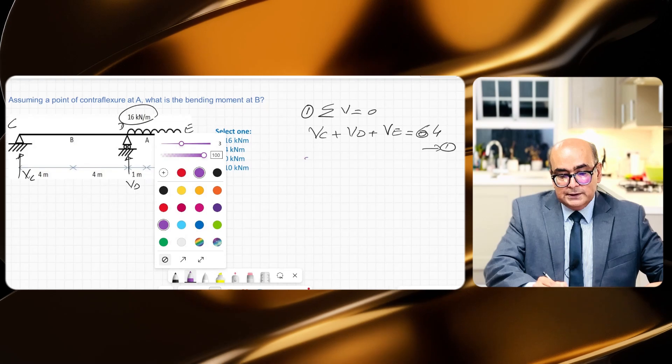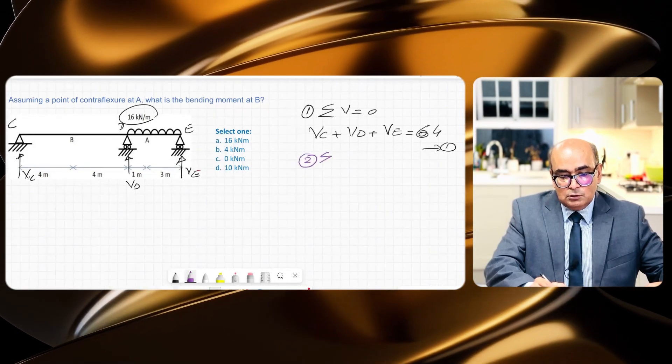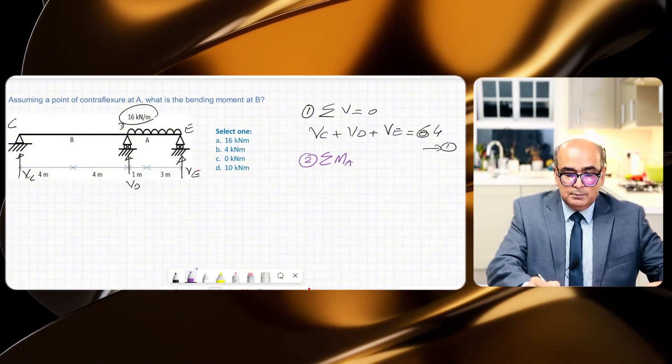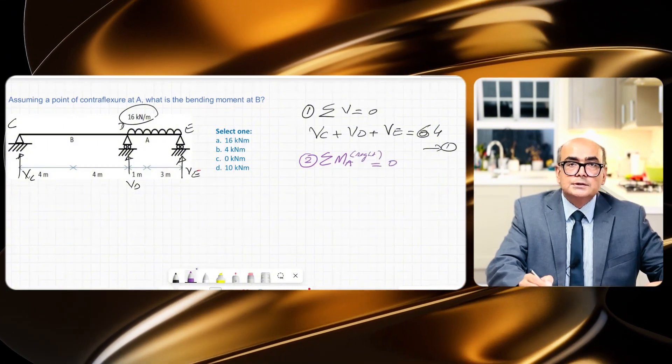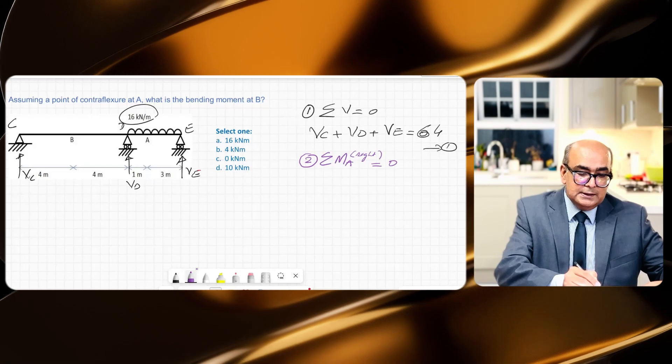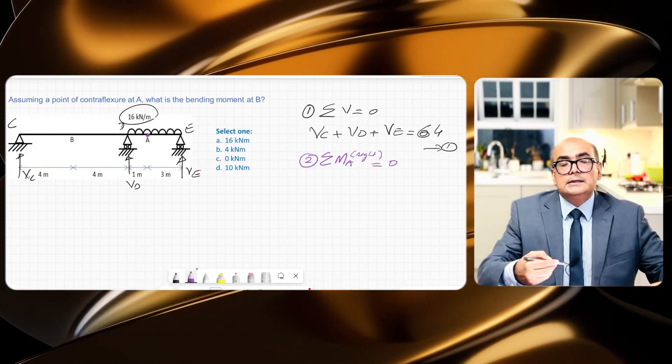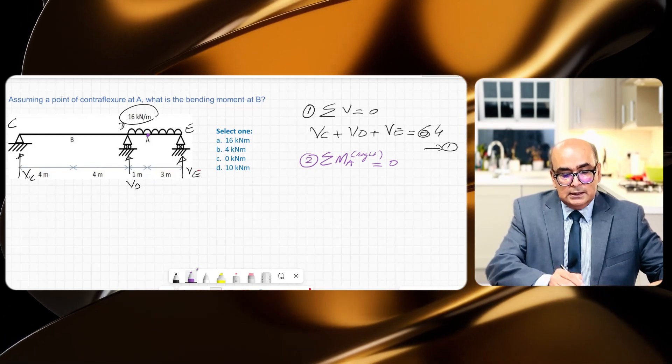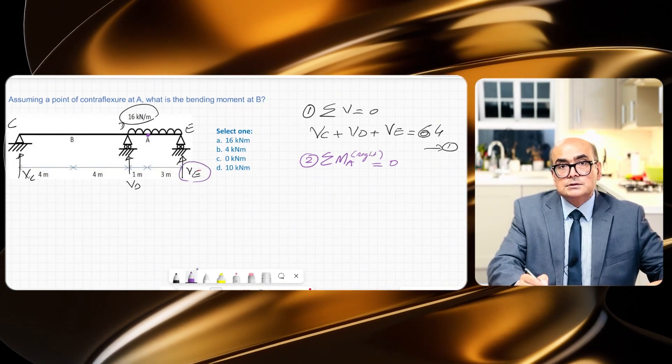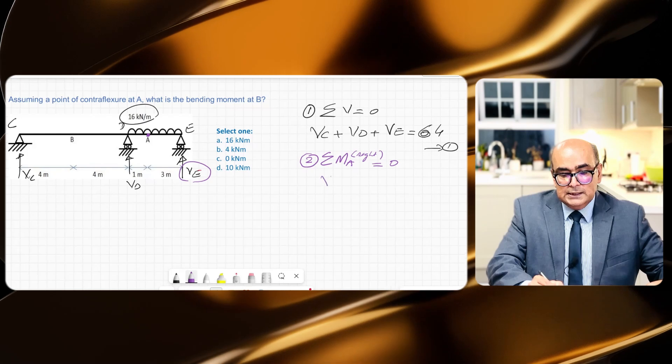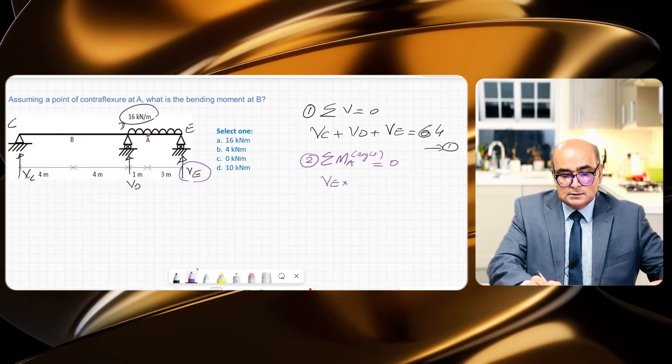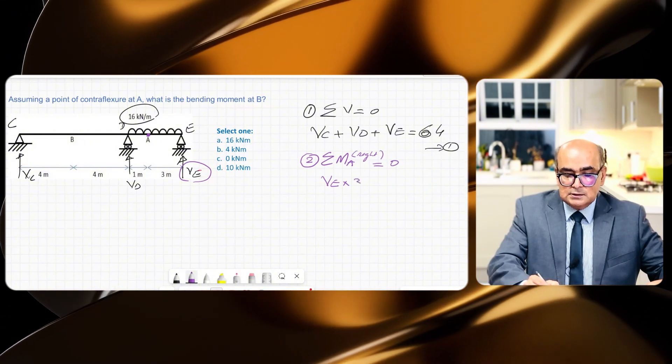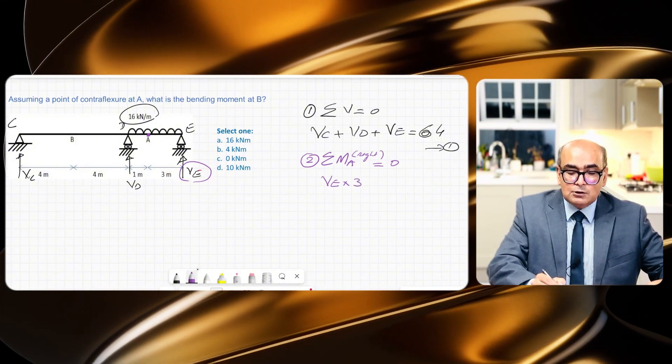I want to first say summation of moment at point A, but from right side, is equal to zero because this is internal pin at point A. That will help me to find out the reaction at E when I use this.